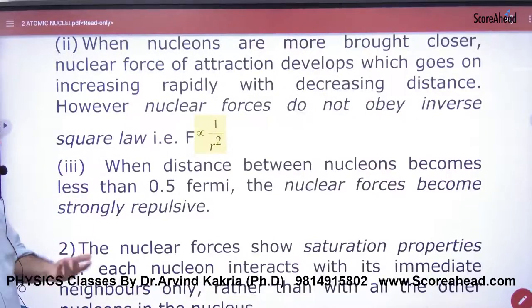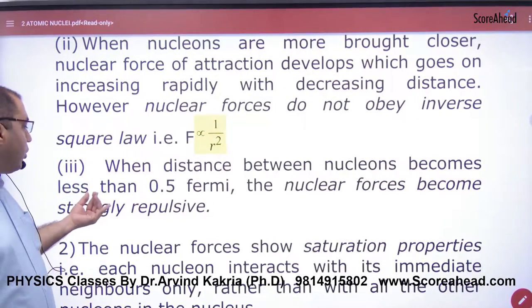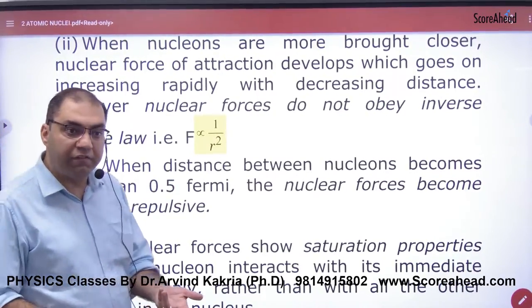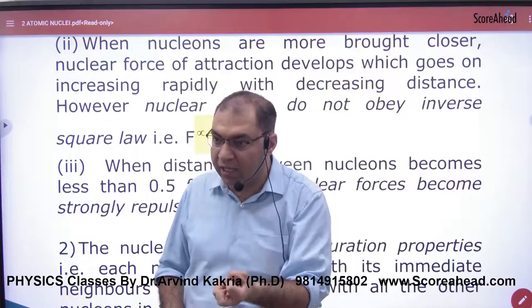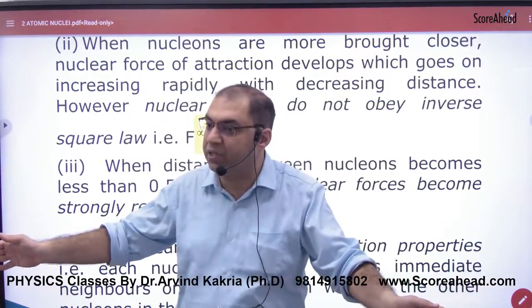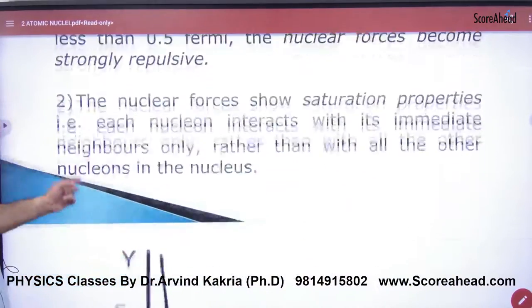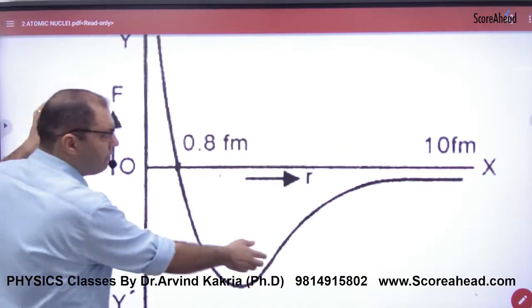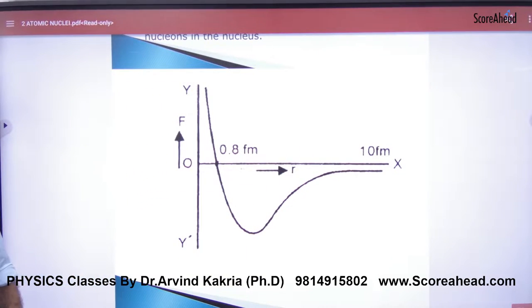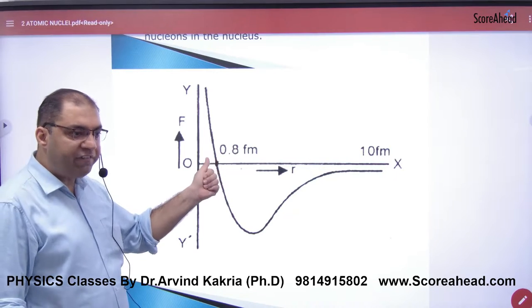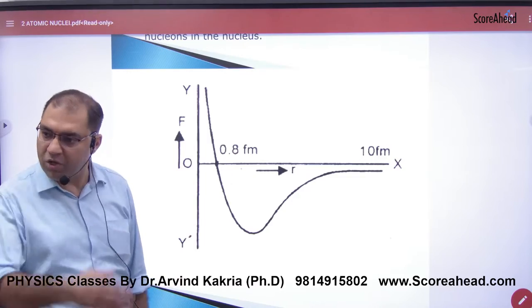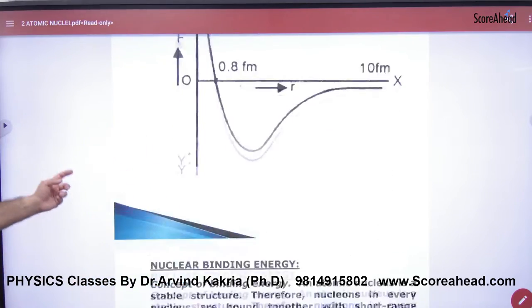So in this, the weird thing is that if the distance between nucleons becomes less than 0.5 fermi, nuclear force becomes strongly repulsive. What do they do? Attractive, they keep bind. But if nucleons get too close, they become repulsive. So this graph is marked. Sometimes one number comes in CBSE. What will be the distance where nuclear force direction changes? The point 0.5 fermi is where the direction changes from attractive to repulsive. And this is the variation, this graph.